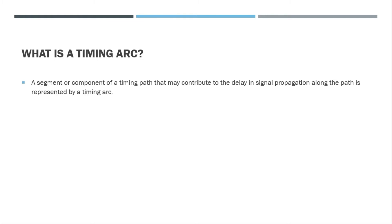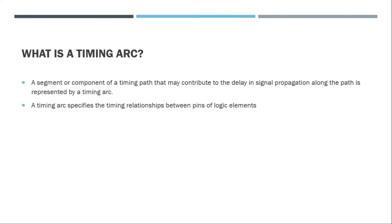A timing arc represents signal propagation delay along the path — it is a part of the timing path. We can split an entire timing path into different segments called timing arcs, be it cell timing arcs or net timing arcs. The timing arc also specifies the timing relationships between the pins of logic elements; it need not be related only to delay.